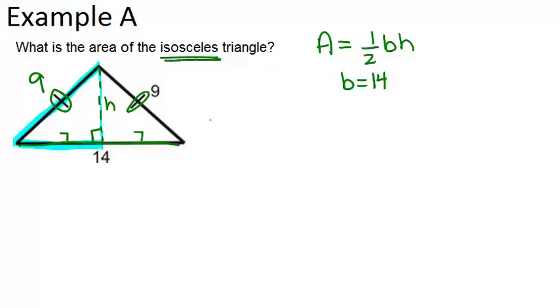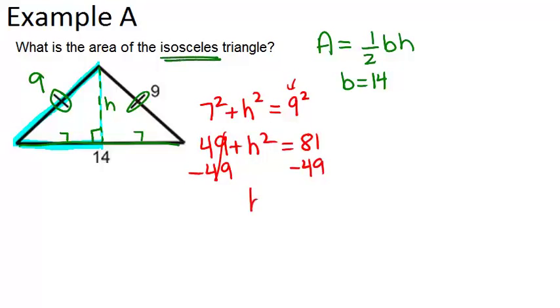So what we're going to do is 7 squared plus h squared equals 9 squared. Remember, you always have to have the hypotenuse by itself on one side of the equation. So 49 plus h squared equals 81, minus 49 from both sides to get h squared equals 32. And when we square root that, we get that h is approximately 5.65.